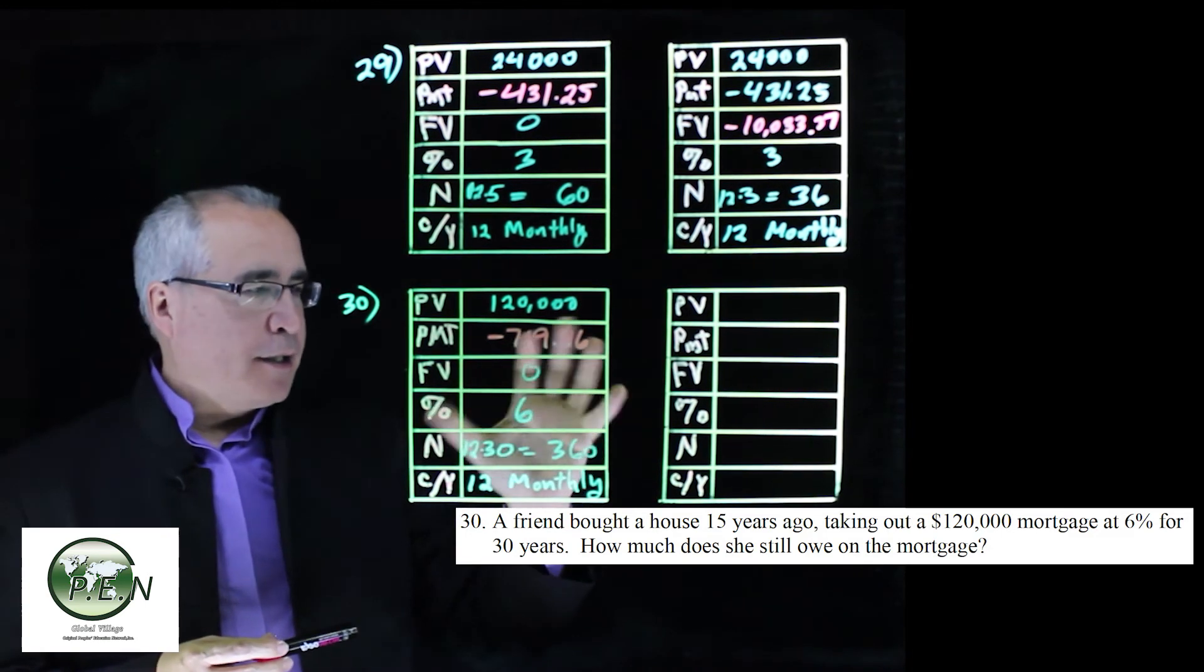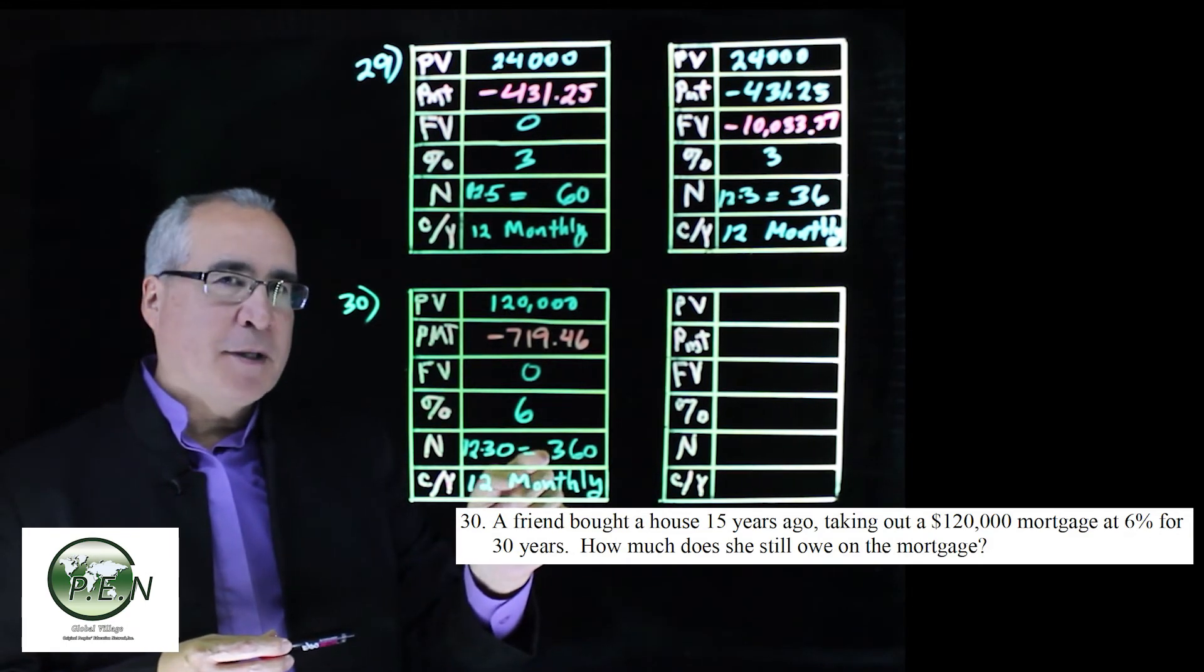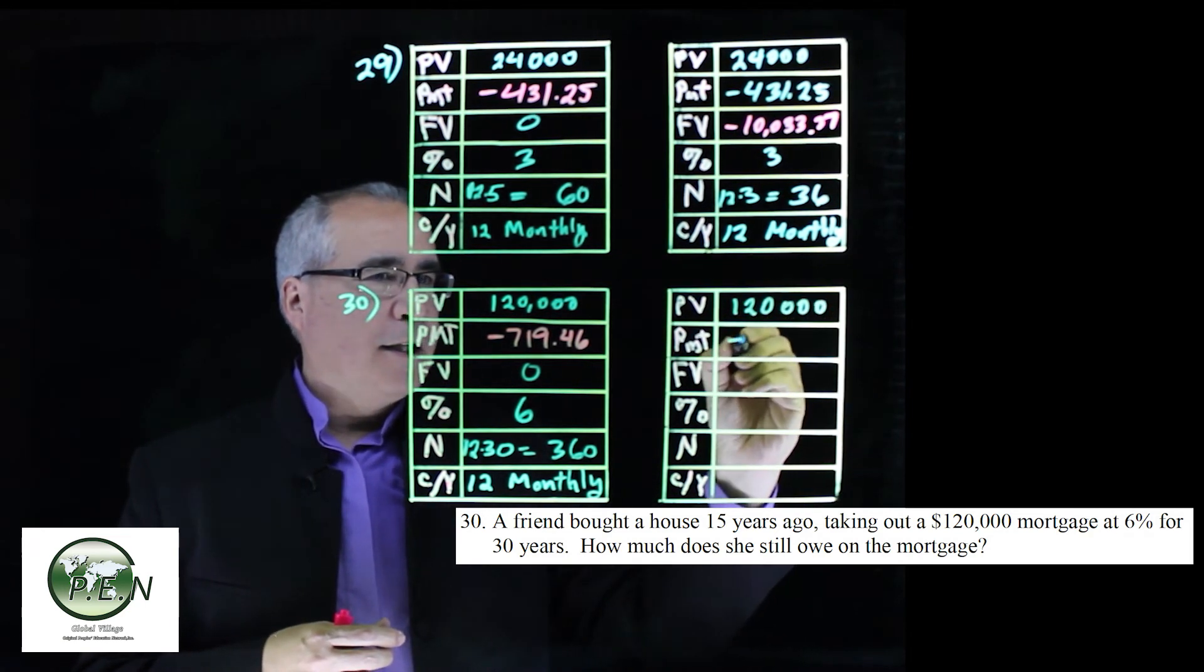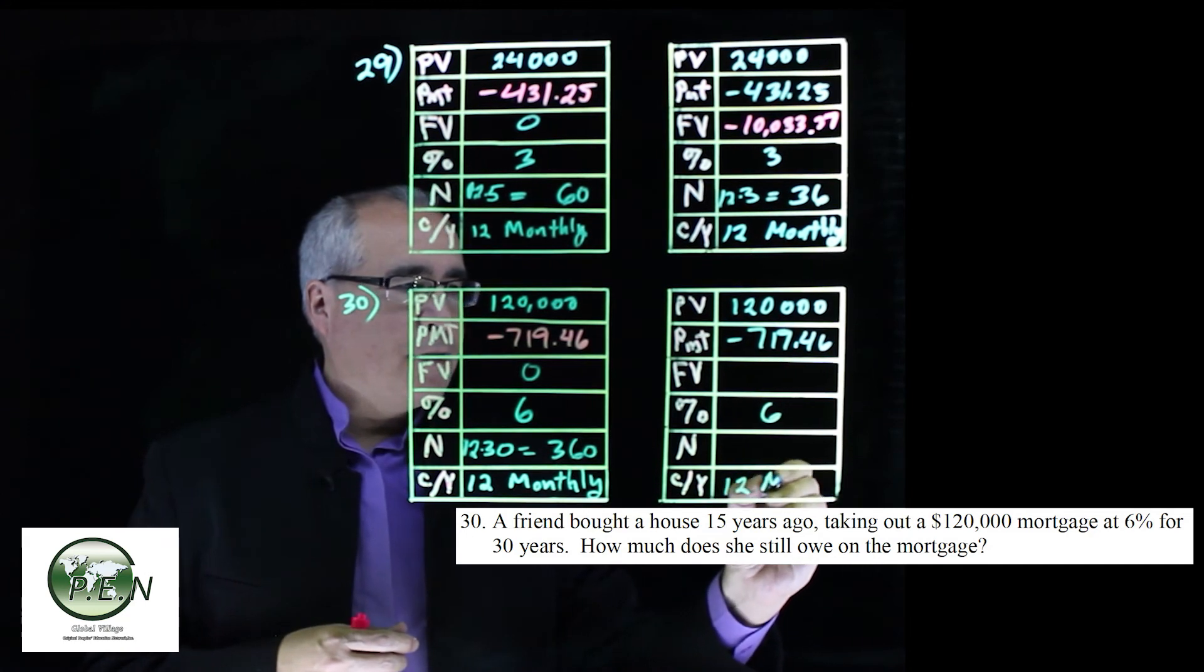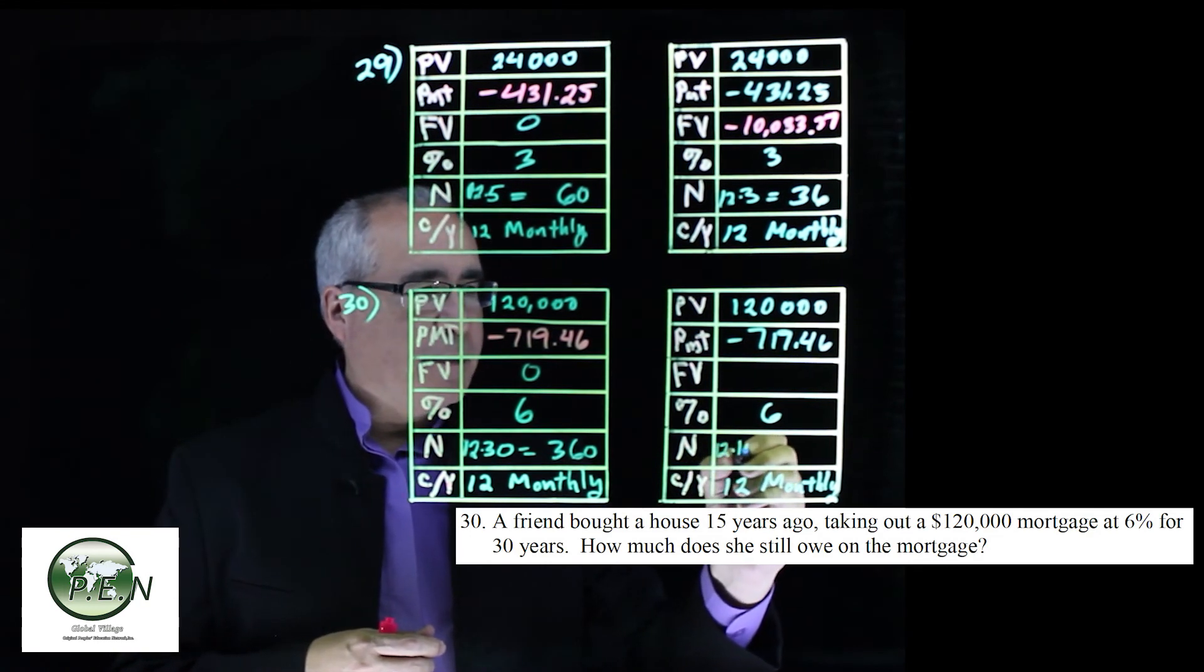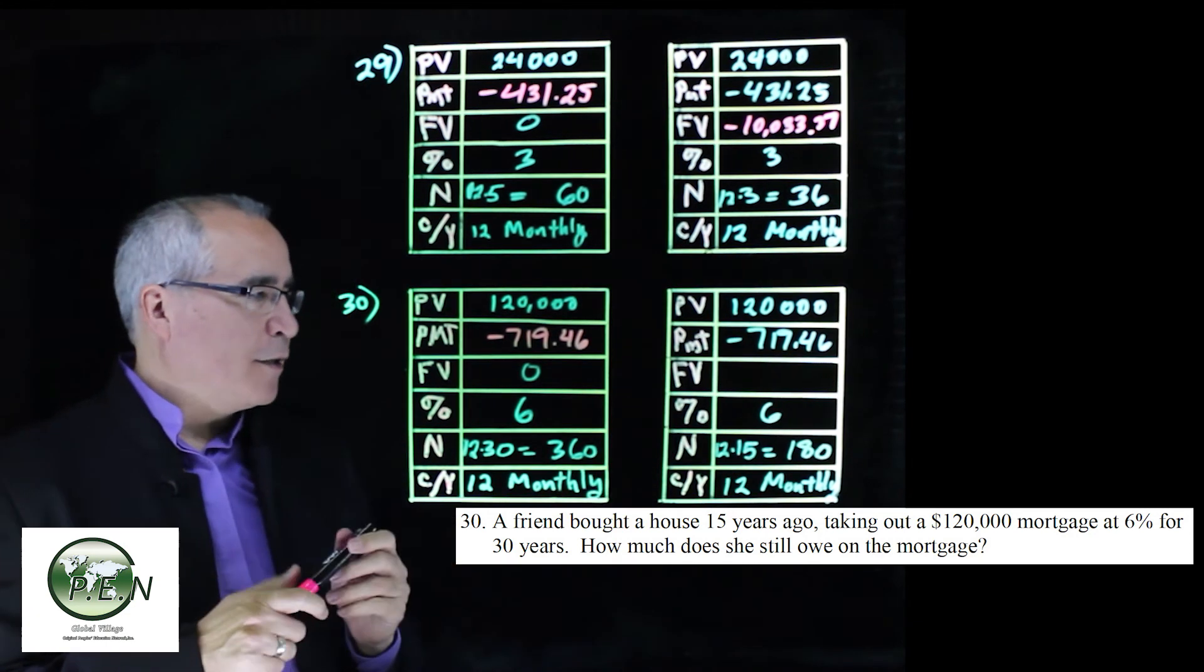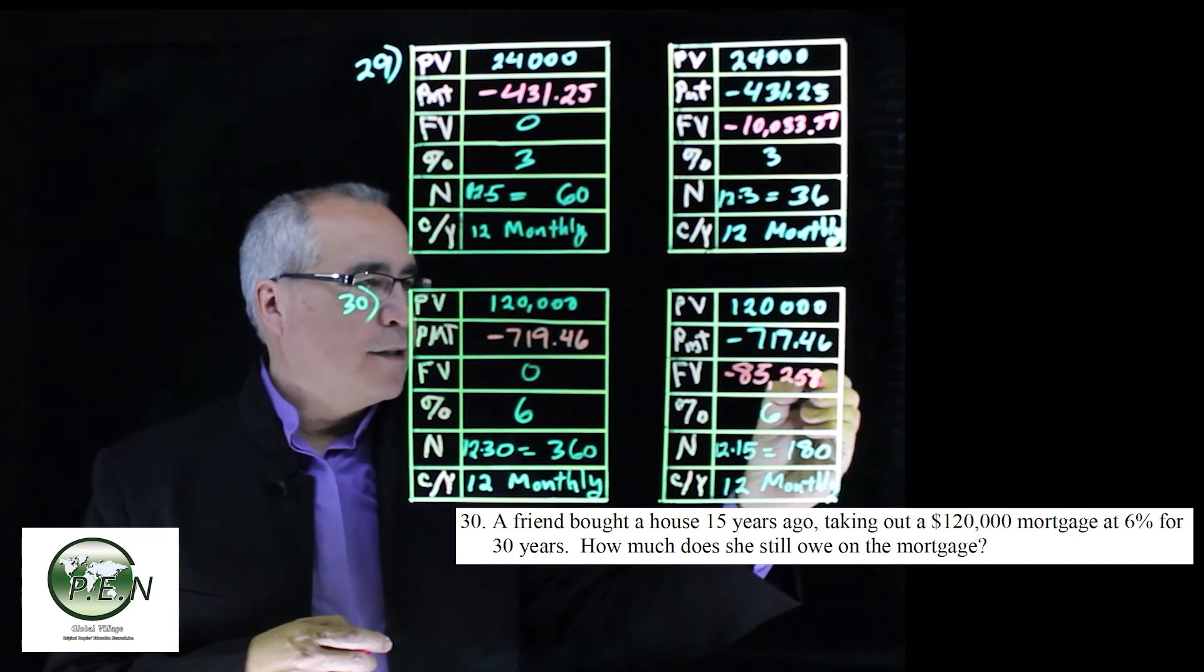Now, to figure out what our friend still owes on it, what we're going to do is we're going to use most of these values, but we're going to change the number of payments to only 180 made. So we bring everything over again. Negative $719.46. Future value, we're going to leave blank. 6% still there. We're still going to leave this as 12 and monthly. The part we need to change is this is going to be 180 payments. So 12 times 15. We're only 15 years into this loan. We've made 180 payments. Click on the future value, and it shows that our friend still owes $85,258.80.